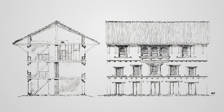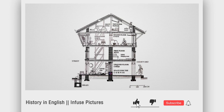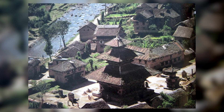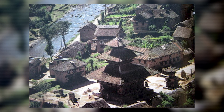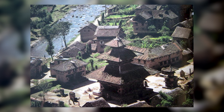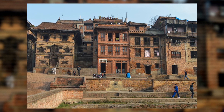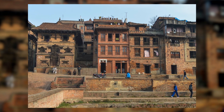Within the Newari community, a prevailing tradition involved constructing houses with three levels. This practice entailed utilizing the first floor for storing household belongings, hosting guests on the second floor, and dedicating the third floor to culinary activities and the kitchen. In each town, a temple was a ubiquitous presence. It was believed that a house's height should not exceed the gajur — a decorative ornament of the temple.